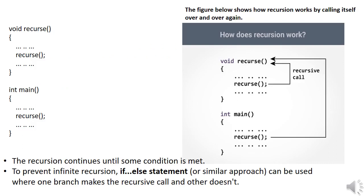This will give you a clear idea about how a recursive function works. Here on the left side, you can see that inside the main function, I have called a function named 'recurs', which is defined before the main function. Inside the function definition, I called that function by itself. The recursive function also calls the same function inside its definition. This is called recursion — a function called by itself.